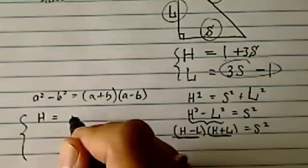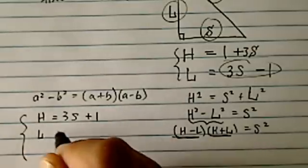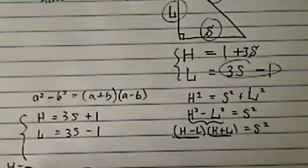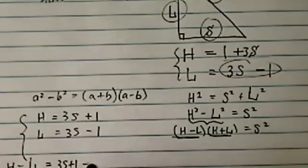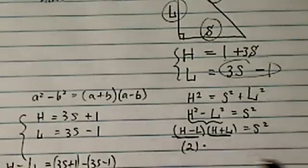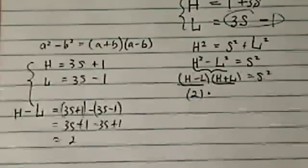H here is equal to 3S plus 1, L is equal to 3S minus 1. So obviously H minus L is not too hard to find. 3S plus 1 minus the quantity 3S minus 1, which equals 2. This part is 2. So mission accomplished, it's almost there.